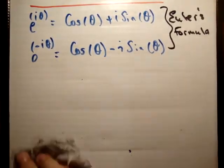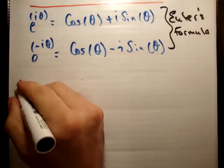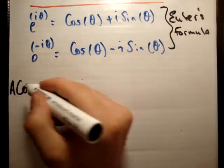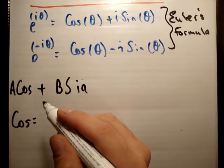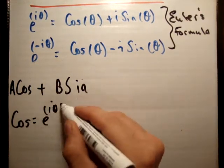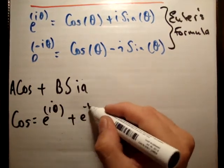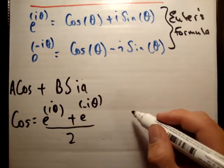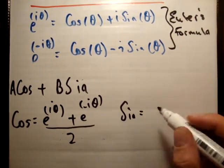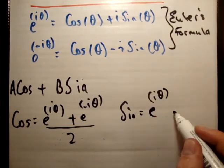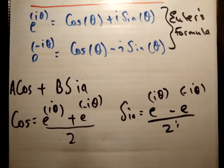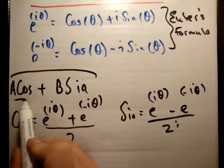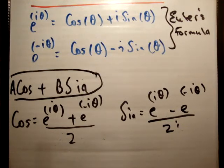The last thing I'd like to show you is, what happens if we add cos and sine? What if, say, a·cos plus b·sin? We know that cos is equal to [e^(iθ) + e^(-iθ)] / 2 and sine is equal to [e^(iθ) - e^(-iθ)] / 2i.